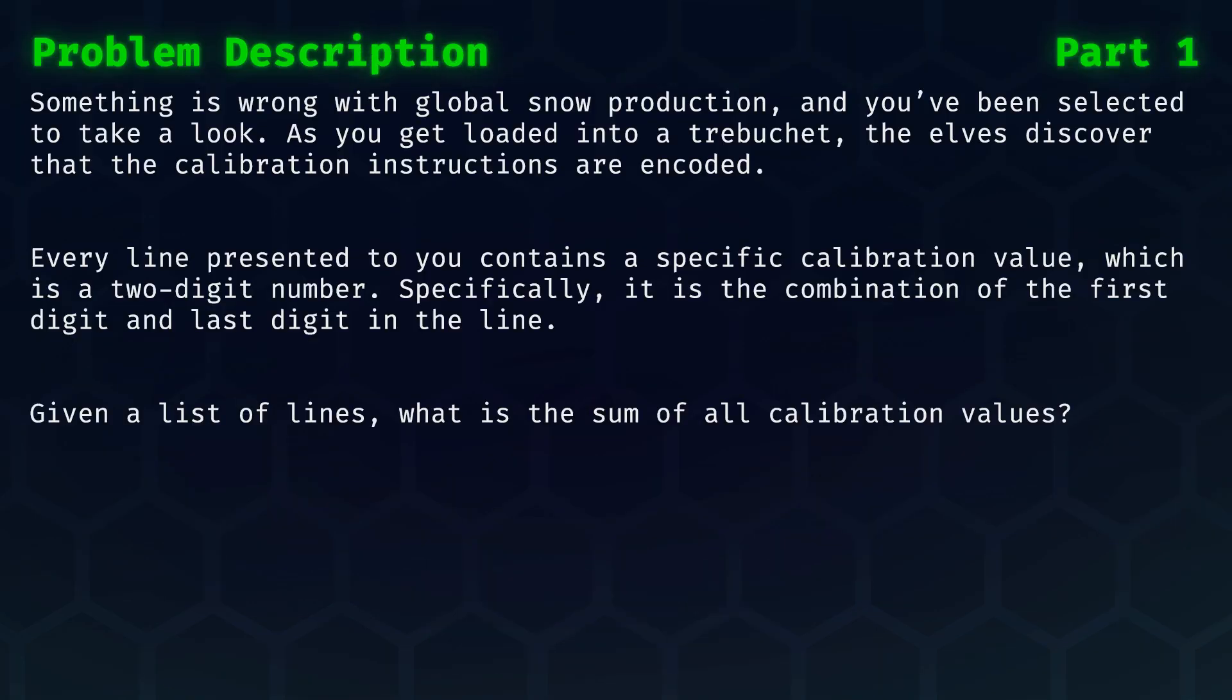The elves noticed that something is wrong with global snow production, and we've been selected to take a look. As we get loaded into a trebuchet, the elves discover that the calibration instructions are encoded. Every line presented to us contains a specific calibration value in the form of a two-digit number. Specifically, it is the combination of the first and last digit in the line. Given a list of lines, what is the sum of all calibration values?